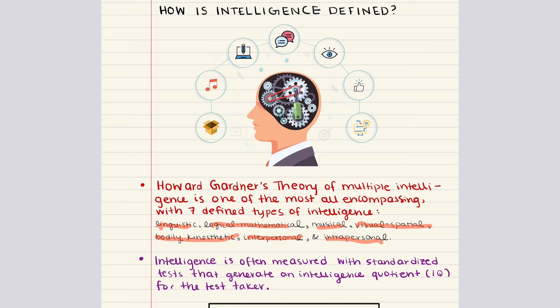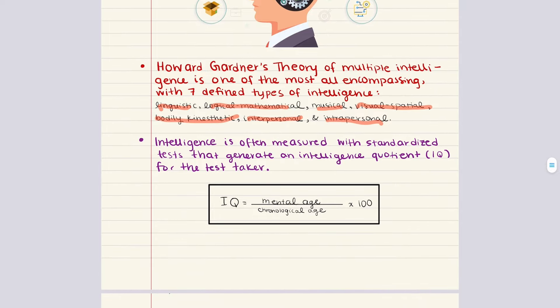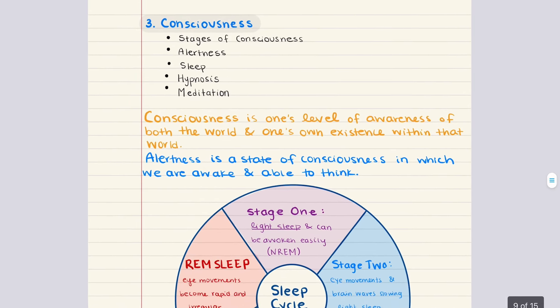Intelligence is often measured with standardized tests that generate an intelligence quotient or IQ. Generally, IQ is calculated as mental age over chronological age multiplied by 100. For example, a four-year-old with intelligence abilities at the level of an average six-year-old would have an IQ of about 150 using this expression. With that, we move into our third objective titled Consciousness.